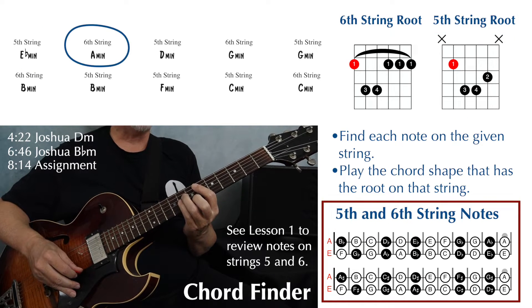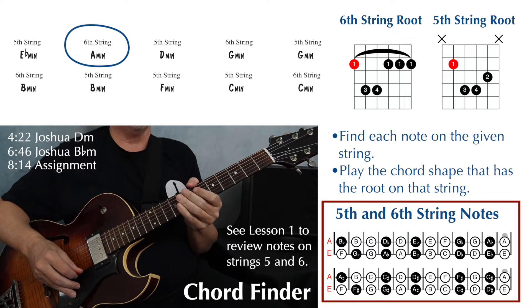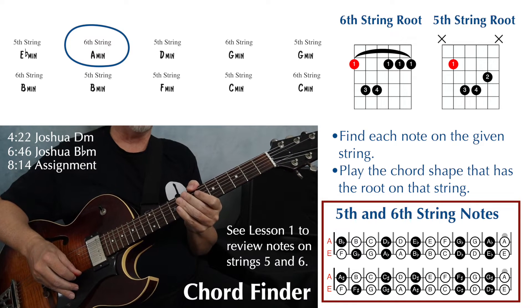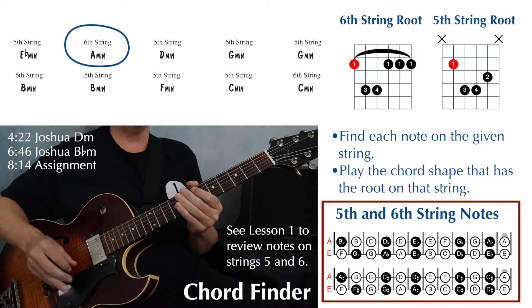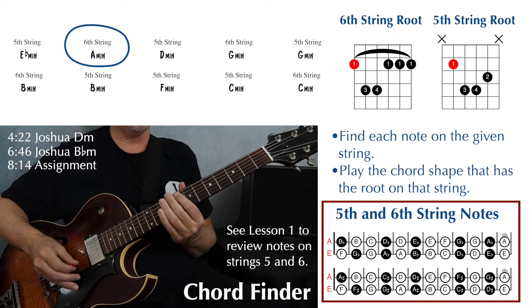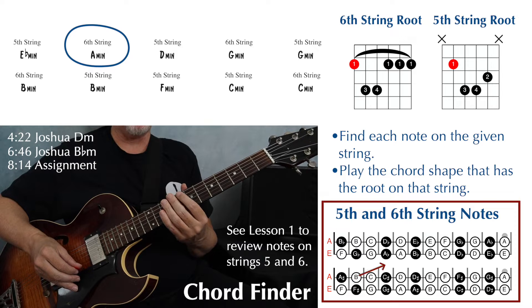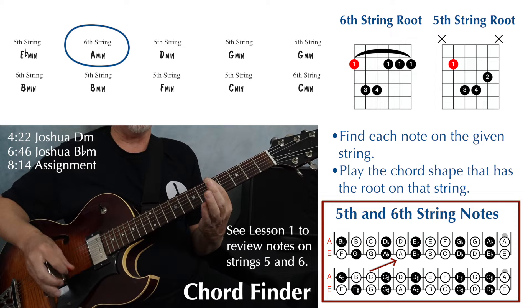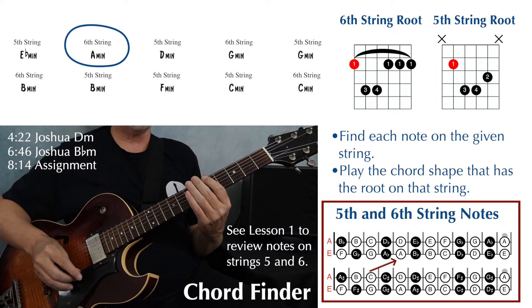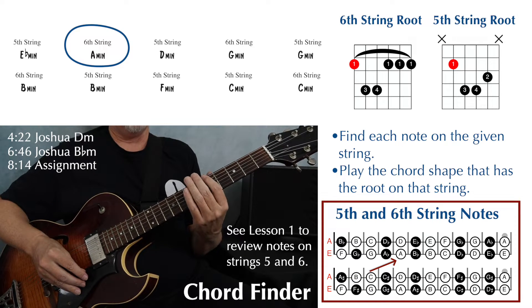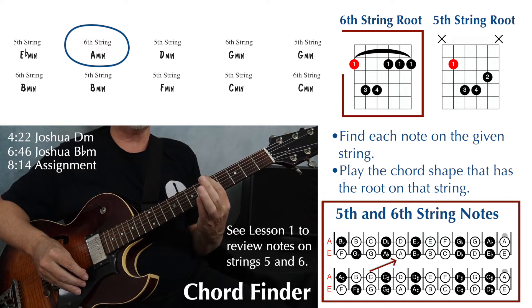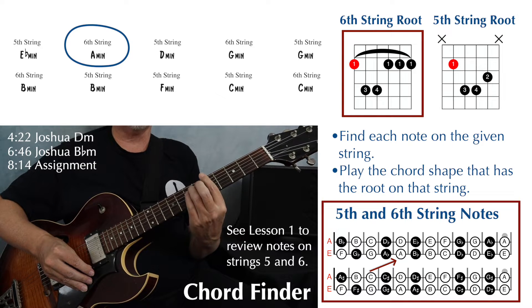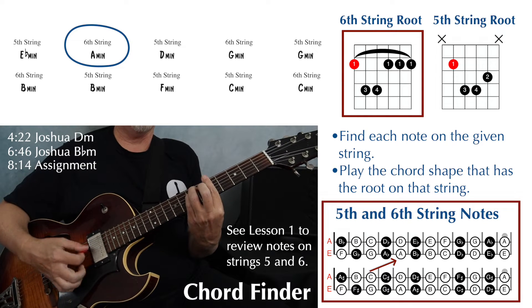Next, A minor on string six. We find our root note first on the sixth string — we need to find that A. That's going to be at the fifth fret. And then because that is a sixth string root, we play our sixth string root shape.